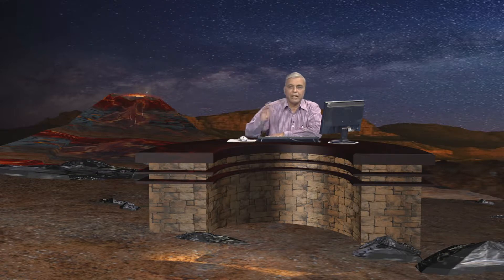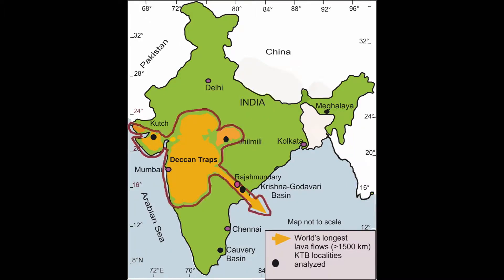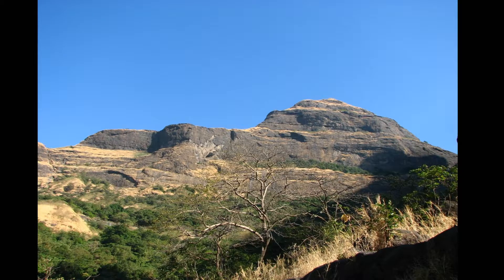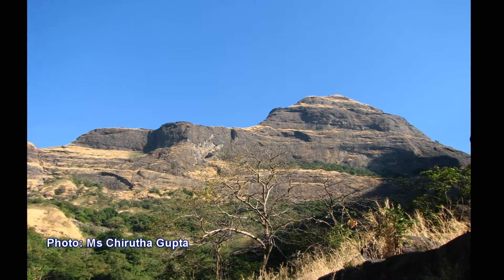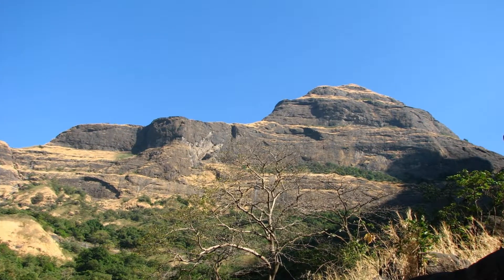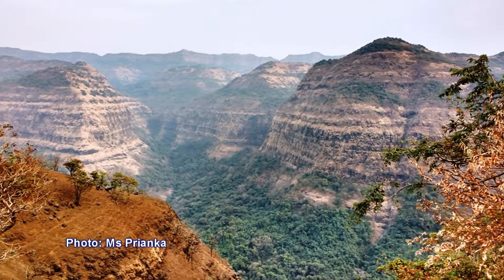The question arises: why do we call it Deccan volcanism? The Deccan volcanism derives its name from the Deccan plateau in western India, which covers a large part of the country. Particularly in the Maharashtra region — Bombay, Pune, Kolhapur — all these areas are covered by Deccan hills, better known as the Deccan plateau, which is a very important landform across our country. The Deccan volcanism derives from the good development of volcanic rocks in this area.